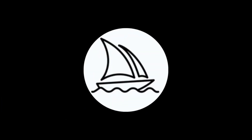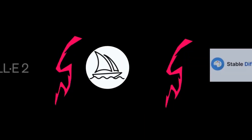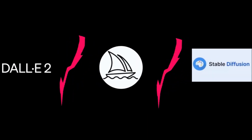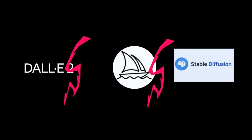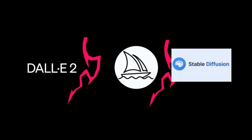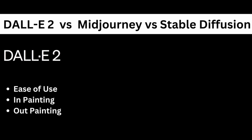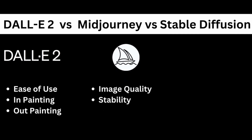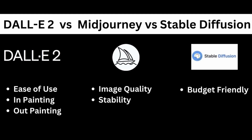Overall, for most of the prompts, Midjourney produces the best results. Which platform is the best? Well, it really depends on your needs and preferences. DALL-E 2 is great for its ease of use and features like in-painting and out-painting. Midjourney is perfect for those who prioritize image quality and stability, while Stable Diffusion is a great choice for those who are on a budget.